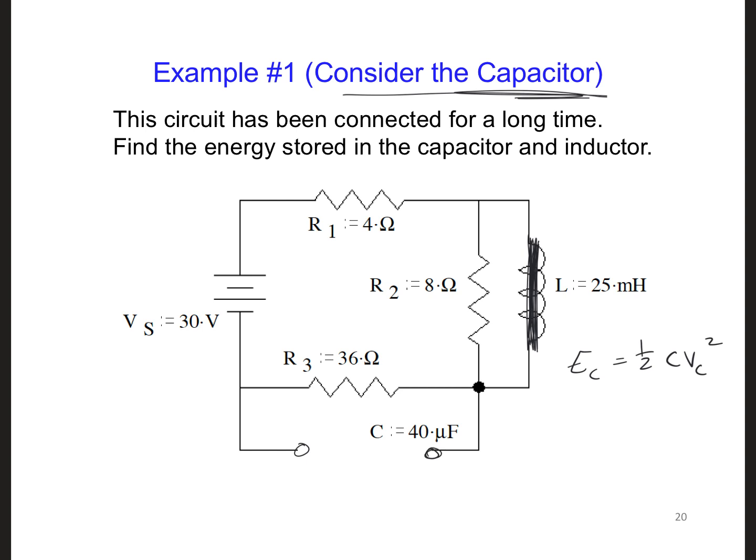And if we want to know the voltage across the capacitor, we can look at, well, what is it connected to? It's connected to these two nodes, which is the same as where R3 is connected. It's also connected between two nodes. And R3 is actually part of our circuit where the current is flowing.